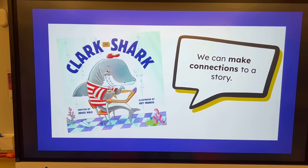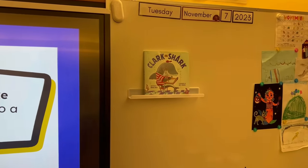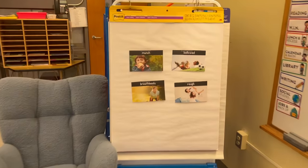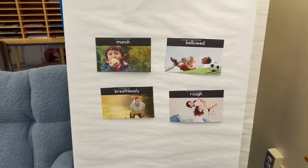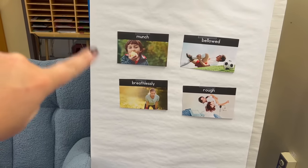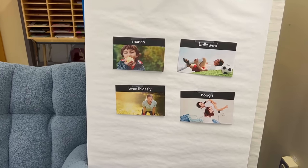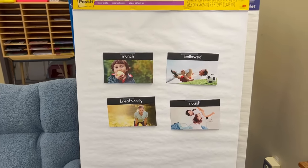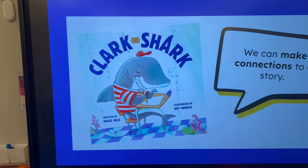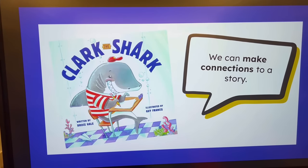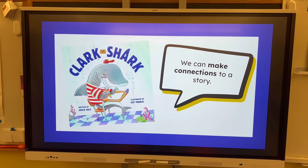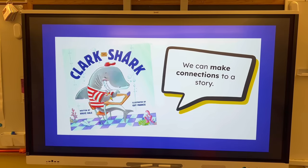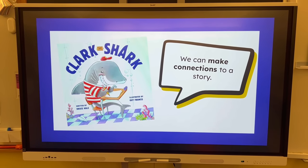We are reading Clark the Shark. Yesterday we read it and practiced retelling. I have my little Book Bunches — I'll link them in the description — they're 15-page mini units for a bunch of my favorite books. Here's the vocabulary that came from that. I explicitly taught what each word means and we pointed it out in the story when we got to it. Yesterday we practiced retelling using a little retelling sheet. Today we're going to practice making connections.